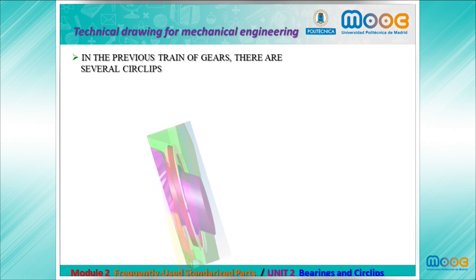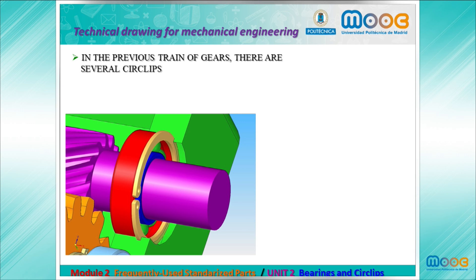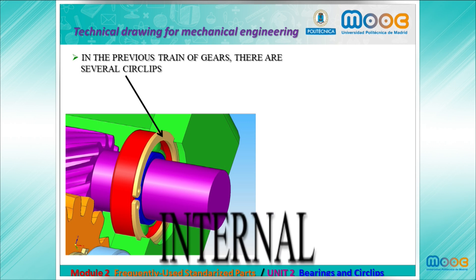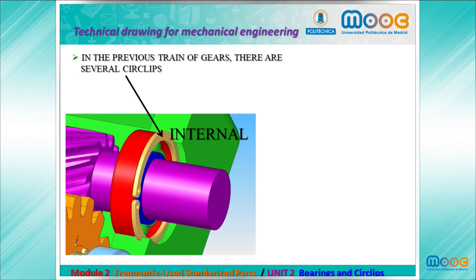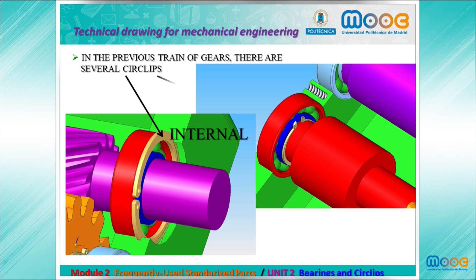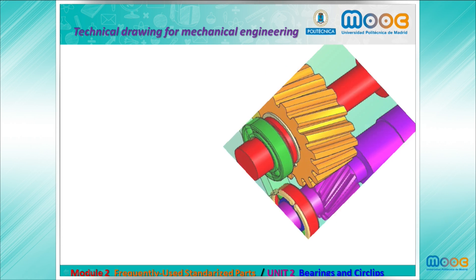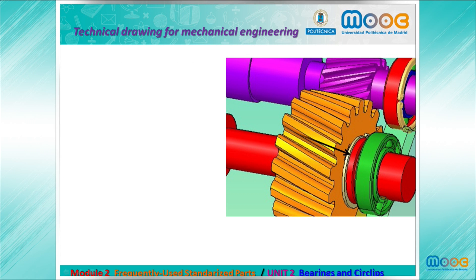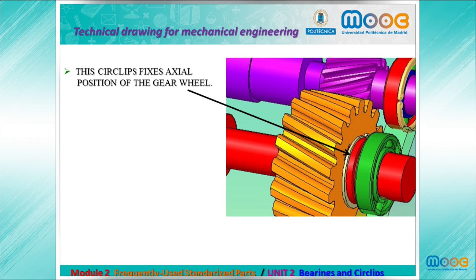In the previous train of gears there are several circlips. We can see here an internal circlip and an external circlip. In this case the circlip fixes the axial position of the gear wheel, not of a bearing.